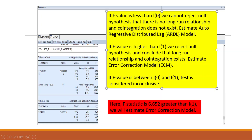We compare the F-value — here 6.65 — with the upper bound at 5%, which is 4.85 for I(1). If the F-value is less than I(0), we cannot reject the null hypothesis, and we estimate the ARDL model. If the F-value is higher than I(1) — here 4.85 — we reject the null hypothesis, conclude that a long-run relationship and cointegration exist, and estimate the error correction model. If the F-value falls between I(0) and I(1), the test is inconclusive. Here our F-statistic is 6.658, which is greater than I(1), so we estimate the error correction model.